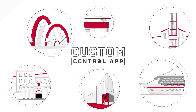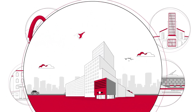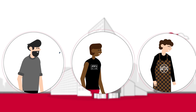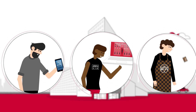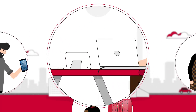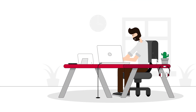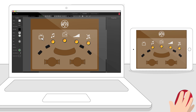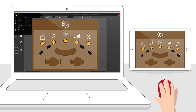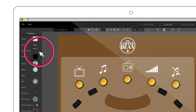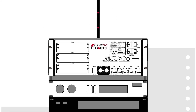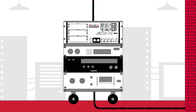Custom Control from Allen & Heath is an installation app that gives different users the control they need over the audio system, from their phone, computer or tablet. The integrator uses our custom control editor software to design fully customized interfaces. And when they're done, they're uploaded to the network, where they're ready for deployment on demand.